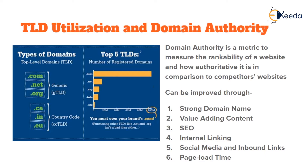The number of registered domains under .com is the most because they have quick recall value — customers naturally search for any domain with a .com extension first. If they don't find a .com, they try combinations like .net or .org, and sometimes they also search for country-code-based extensions like .ca, .in, or .eu, depending on the country the business belongs to.